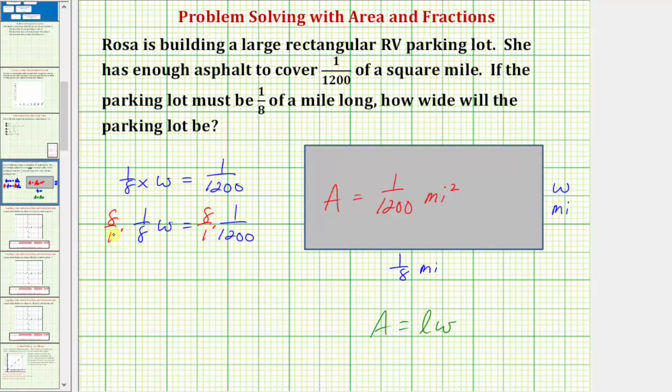Whenever we multiply a fraction by its reciprocal, it's always equal to one. Notice how here we have a common factor of eight. There's one eight in eight, and one eight in eight. So this product is just one times one times W, which is W.